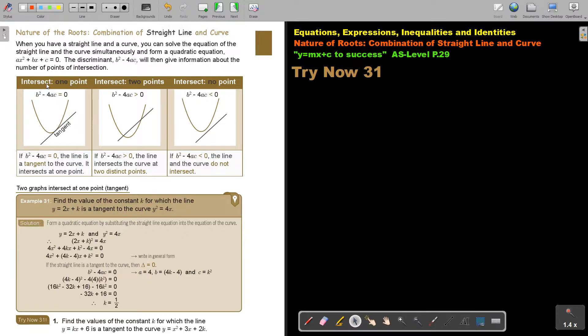If the discriminant is equal to zero, then it will just be a tangent. So, the line is tangent to the curve. It intersects at one point. If the discriminant is bigger than zero, the line intersects the curve at two distinct points, two different points. And if the discriminant is smaller than zero, the line and the curve do not intersect.